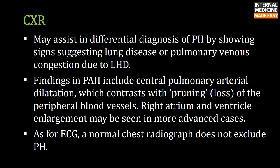Chest X-ray may assist in the differential diagnosis of pulmonary hypertension by showing signs suggesting lung disease or pulmonary venous congestion due to left heart disease. Findings in pulmonary arterial hypertension include central pulmonary arterial dilatation, which contrasts with pruning of peripheral blood vessels. Right atrium and ventricle enlargement may be seen in more advanced cases. A normal chest radiograph does not exclude pulmonary hypertension.